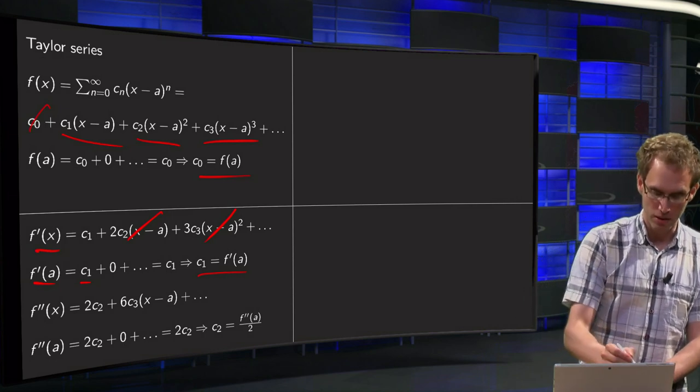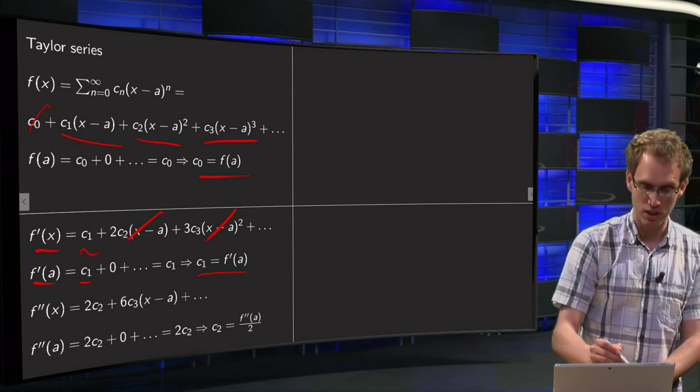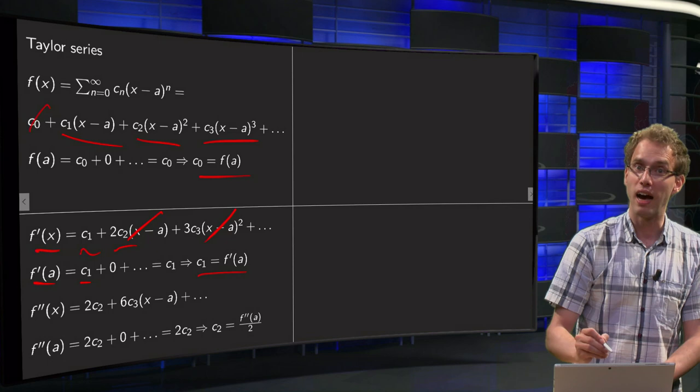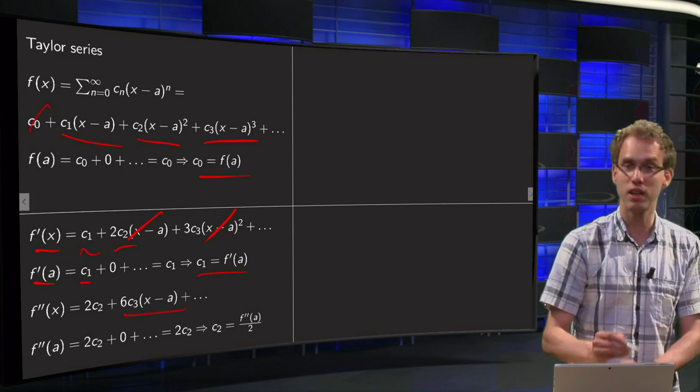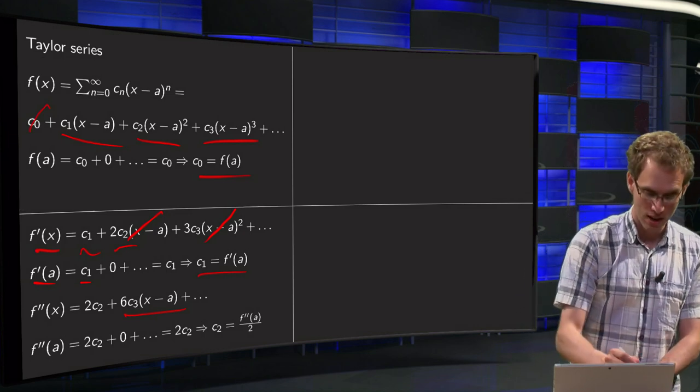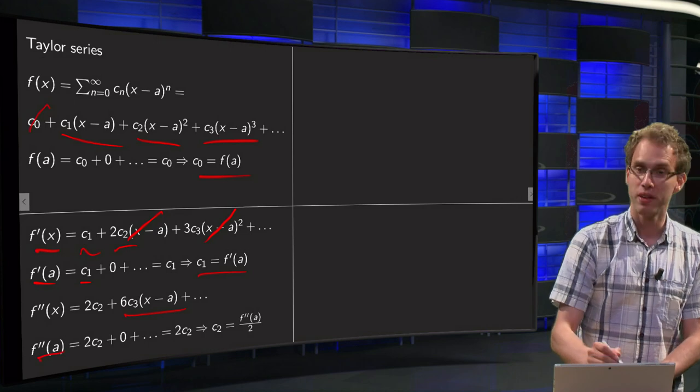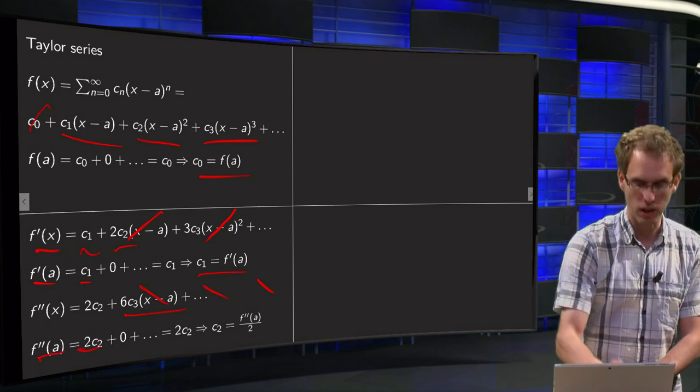So we differentiate f prime, now the c1 drops out, and 2 times c2 times (x-a) gives you 2 times c2, and 3 times c3 times (x-a) squared gives you 6 times c3 times (x-a). And we do the same trick, we substitute x equals a, we find f double prime of a, and now all those terms here in the back will drop out and we get 2 times c2.